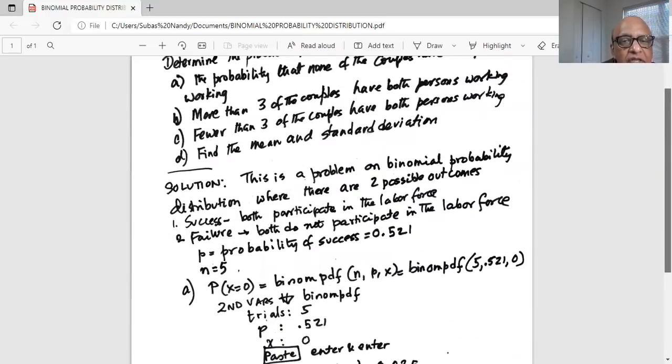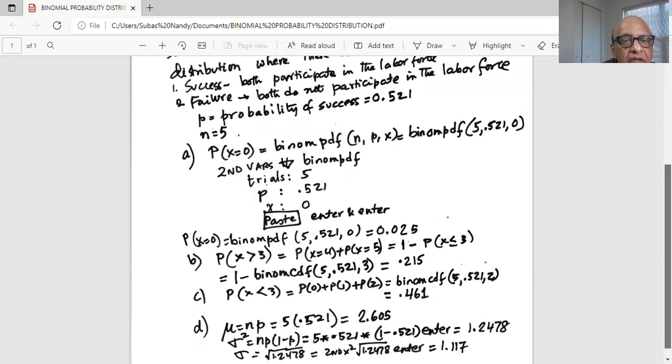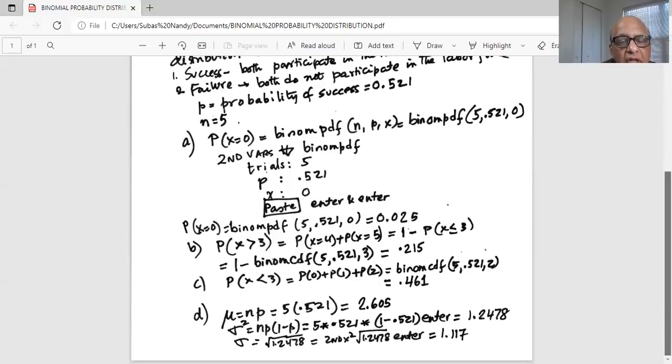Okay, the last part says find the mean and the standard deviation. Now mean of a binomial distribution is given as n times p. n is number of trials, p is probability of success. Five times 0.521 is 2.605.